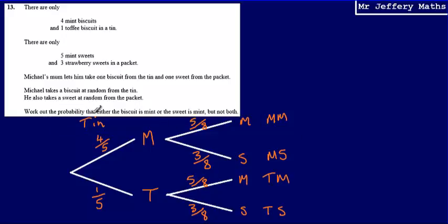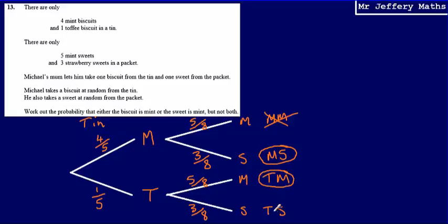We're asked to work out the probability that either the biscuit is mint or the sweet is mint, but not both. So we're not interested in him choosing both a mint biscuit and a mint sweet. We are interested in the combination where the biscuit is mint and the sweet is strawberry, or where the biscuit is toffee and the sweet is mint.